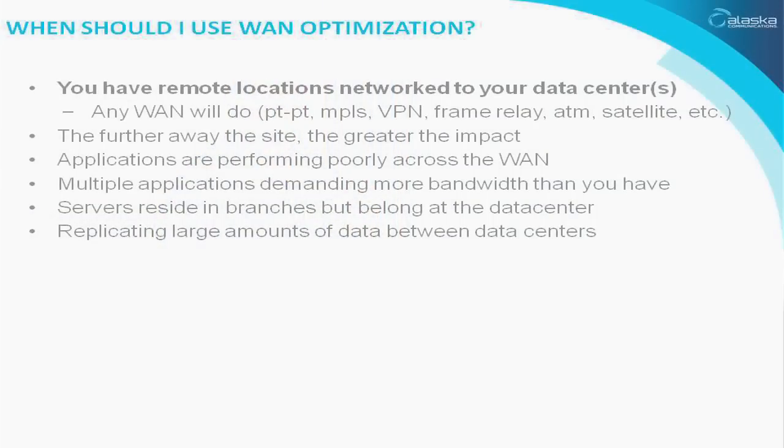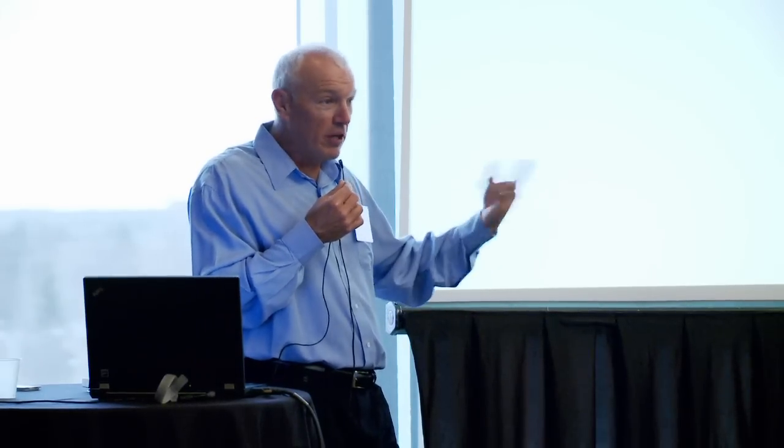When do you want to use it? You've got a WAN with latency — network to your data center. Any WAN will do. This is very important. Will it work over frame relay? Yes. ATM? Yes. Why will it work over any WAN? Because our product is not a layer 3 device. We sit behind your router. The router terminates the WAN, so we don't care what type of WAN it is. The further away or the worse the performance is at that remote site, the bigger the effect you're going to have when you do WAN optimization.